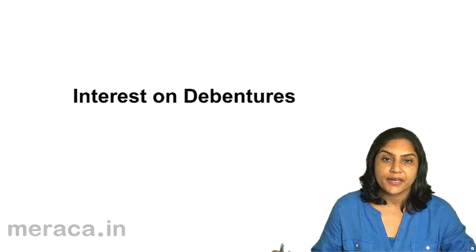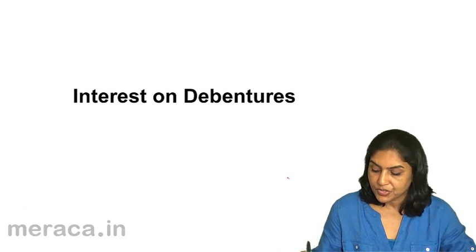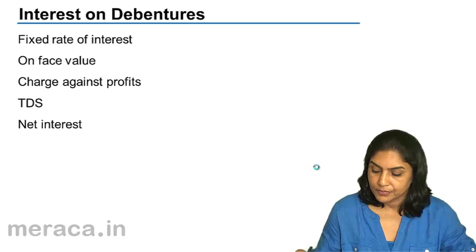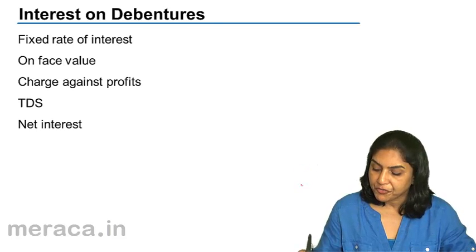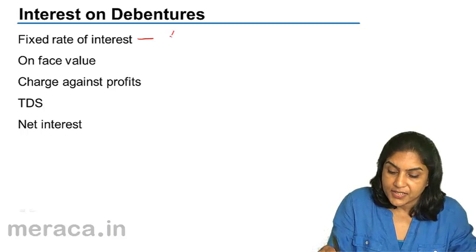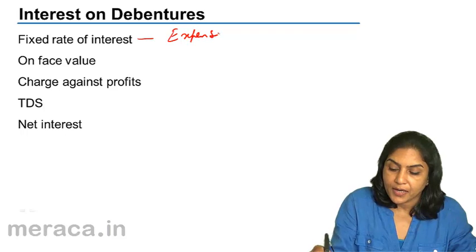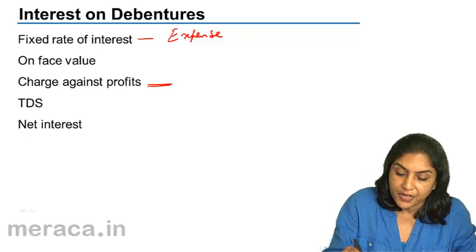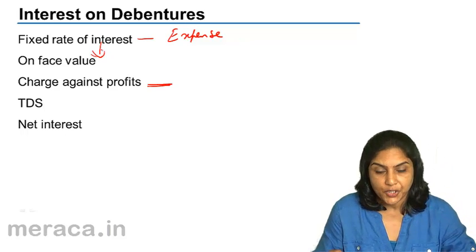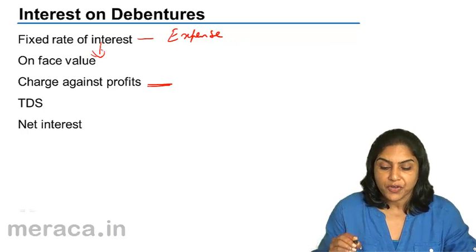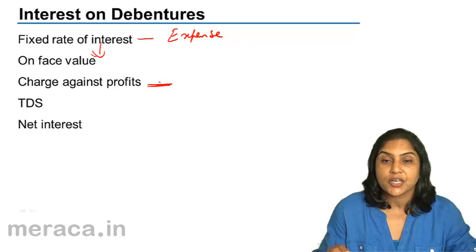Next, we'll discuss interest on debentures. Debentures carry a fixed rate of interest. This is an expense for the company; therefore, it is a charge against profits. The rate of interest is always computed on the face value. The debentures may have been issued at par, premium, or discount, but interest is charged on the face value. It is an expense and charged against profits.